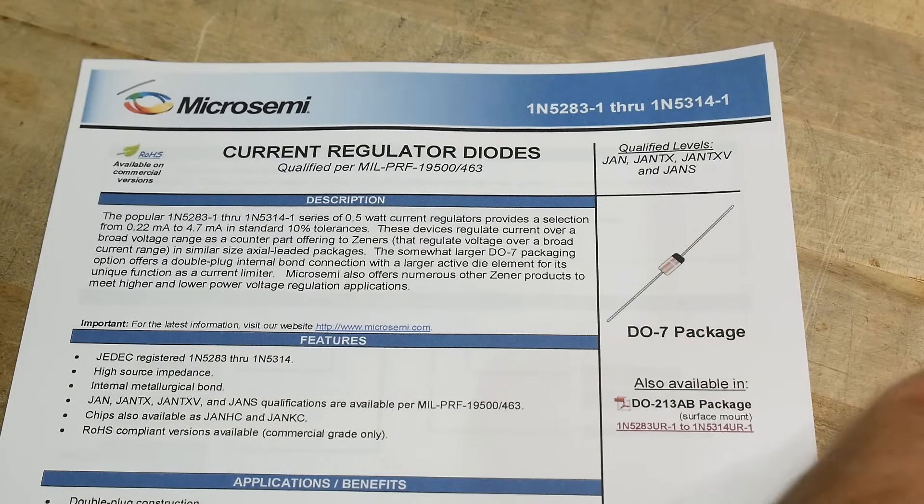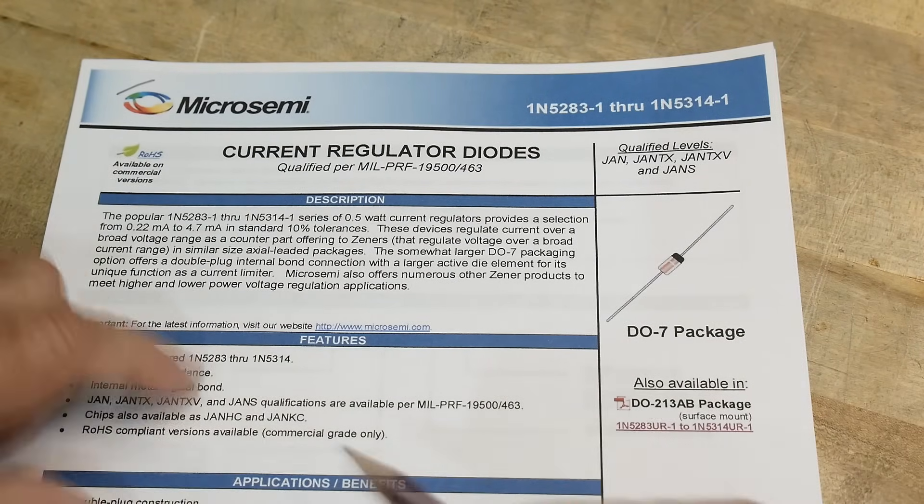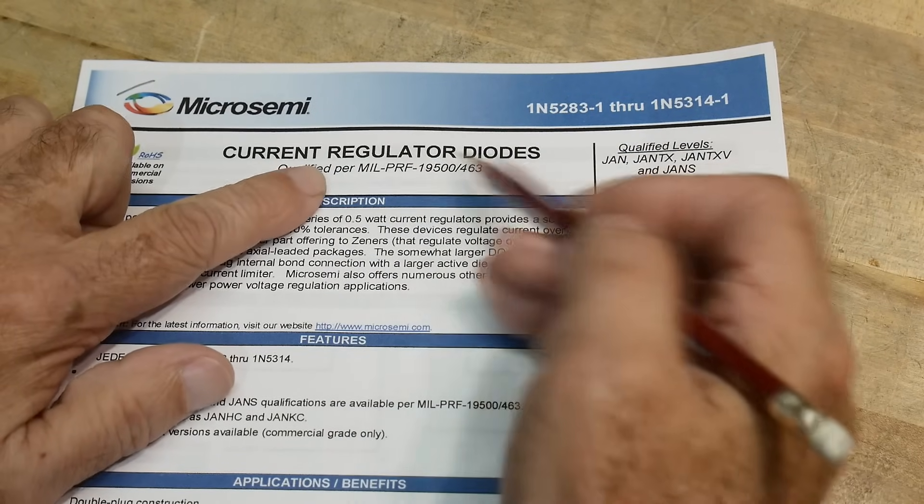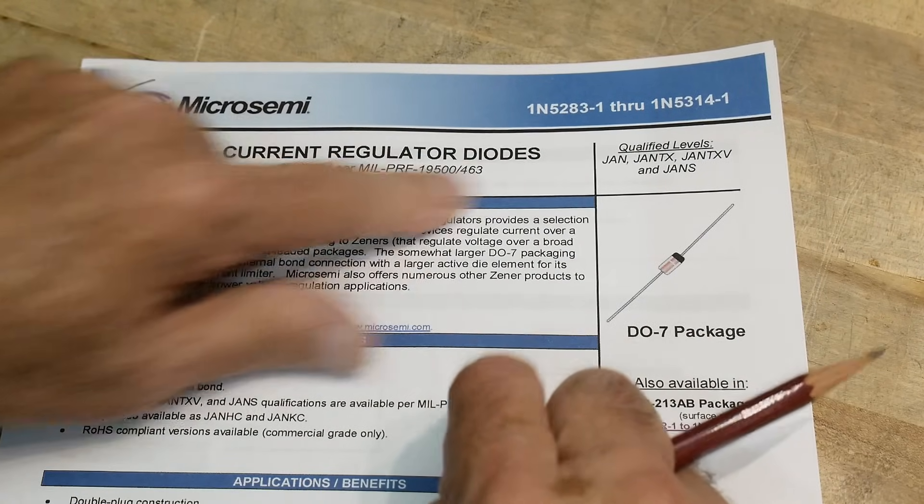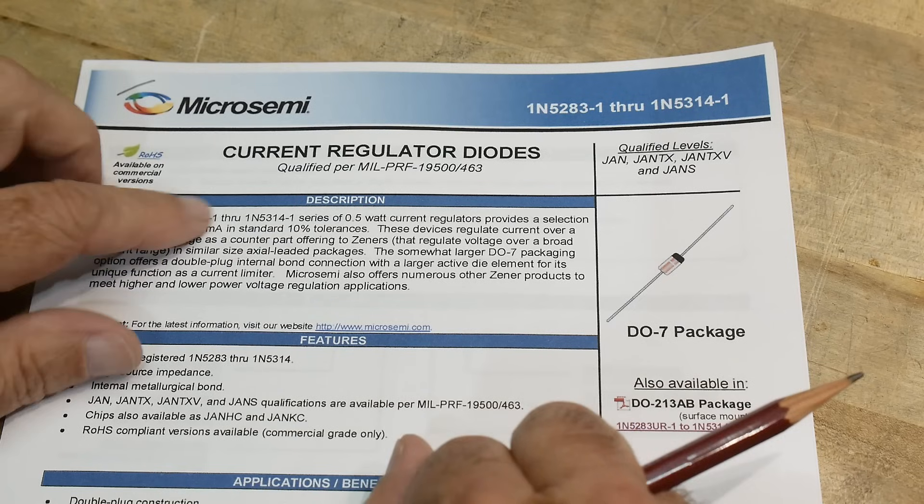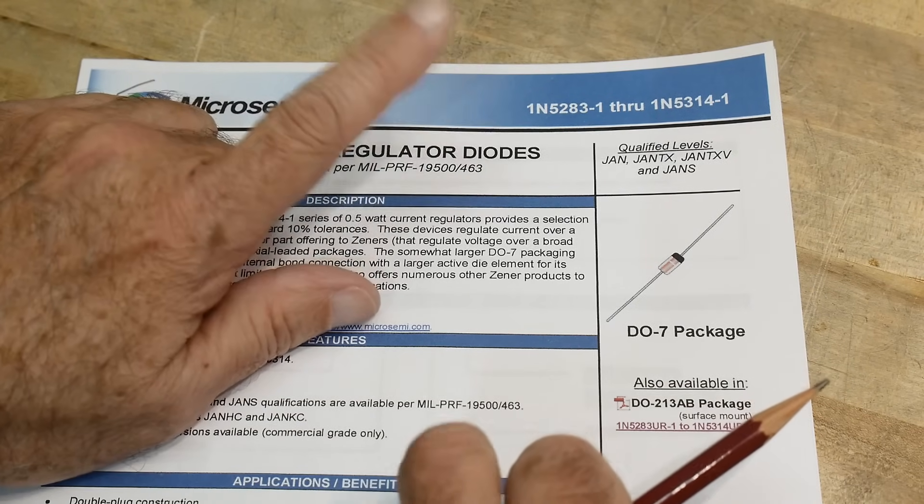Alright, chip of the day. Everybody loves chip of the day. Today we are going to be looking at current regulator diodes. There are voltage kind of regulator diodes, Zener diodes, but these are current regulator diodes.